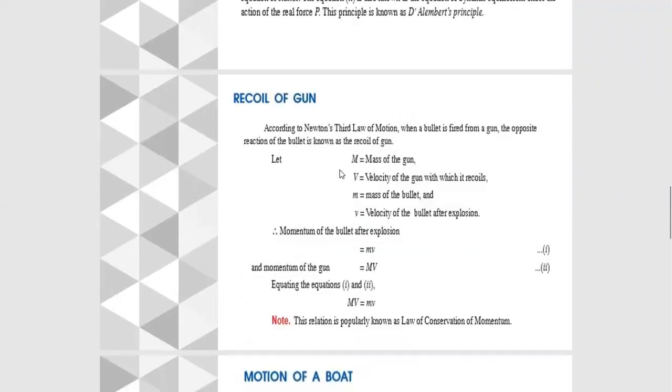The next point is recoil of gun. According to Newton's third law of motion, when a bullet is fired from a gun, the opposite reaction of the bullet is known as recoil of gun.